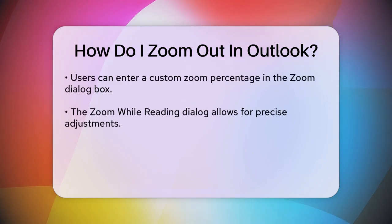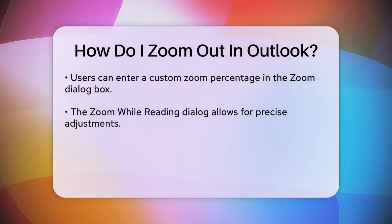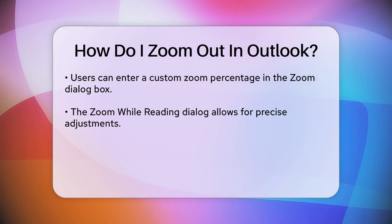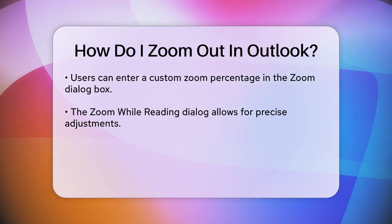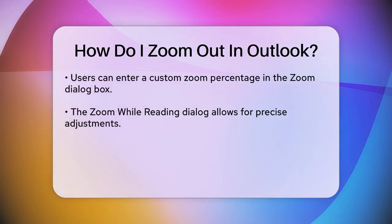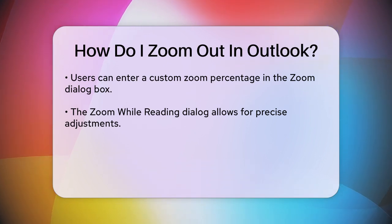For a more precise adjustment, you can open the Zoom While Reading dialog. To do this, click on the zoom percentage in the status bar, or look for the zoom button on the message menu in an opened message. Here, you can select your desired zoom level and even check the box to remember your preference if you're using Outlook 365.